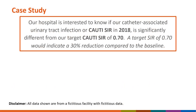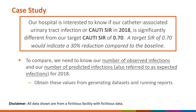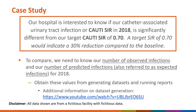In this example, our hospital is interested in knowing if our catheter-associated urinary tract infection, or CAUTI SIR, in 2018 is significantly different from our target CAUTI SIR of 0.70. A target SIR of 0.70 would indicate a 30% reduction compared to the baseline. To compare, we need to know our number of observed infections and our number of predicted infections, also referred to as expected infections, for 2018. We can get these values from generating datasets and running reports using NHSN analysis. For more on generating datasets and running reports, refer to the QuickLearn link on this slide and the additional resources provided at the end of this QuickLearn.